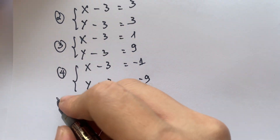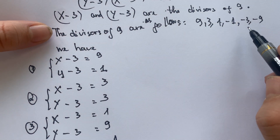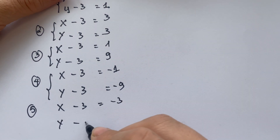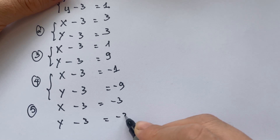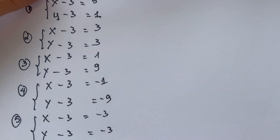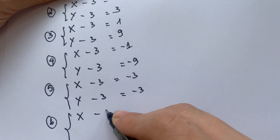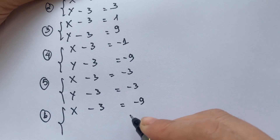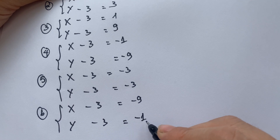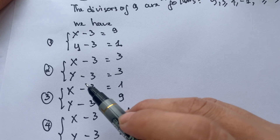For case 5: x minus 3 equals minus 3 and y minus 3 equals minus 3, since minus 3 times minus 3 equals 9. For case 6: x minus 3 equals minus 9 and y minus 3 equals minus 1, since minus 1 times minus 9 equals 9. So in each case, you can find x and y. It is quite easy.